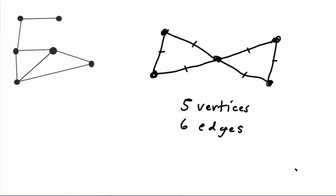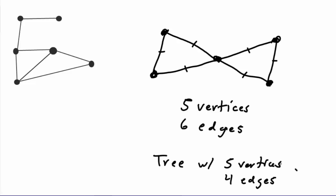We have six edges. If I want a spanning tree on these five vertices, that tree would have five vertices. Remember, if a tree has n vertices it must have n minus one edges. So if we want a tree with five vertices, we would need four edges. One way to get a spanning tree is to delete two edges — we have six edges and only want four.